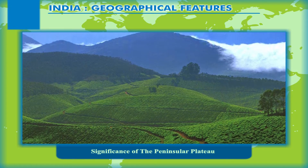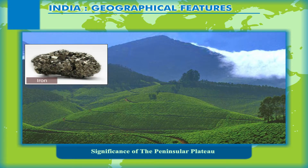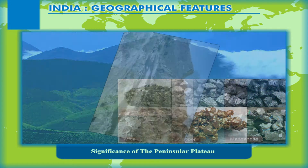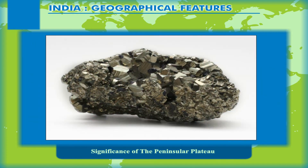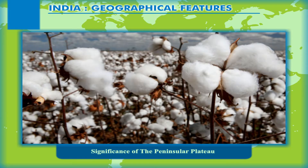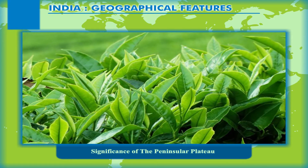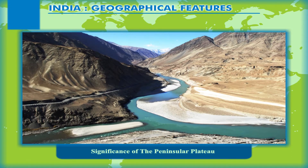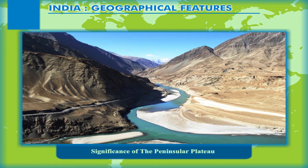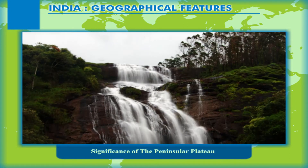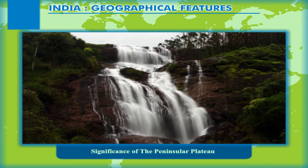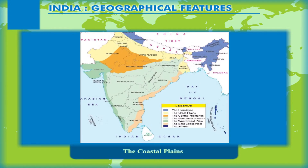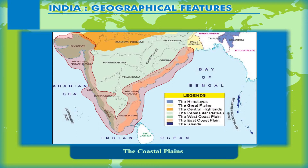The plateau region is rich in a variety of mineral resources; reserves of iron ore, coal, manganese, copper, and mica are spread all over the region. The northwestern plateau region, which is rich in iron, also supports the growth of cotton. The region is suitable for cultivation of tea, coffee, rubber, coconut, and other crops. The swift-flowing rivers crossing the plateau from west to east have several waterfalls and are ideal for the generation of hydroelectricity.